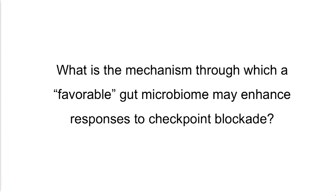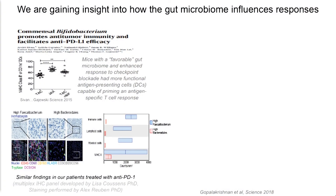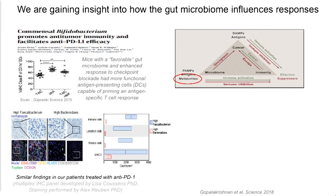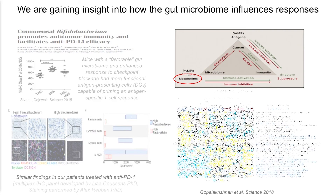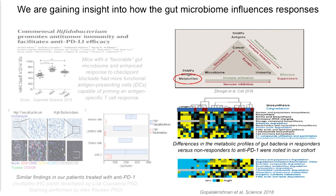A key question is what's the mechanism through which the gut microbiome can actually enhance responses to checkpoint blockade. We know that patients — or mice — with a good gut microbiome had more antigen-presenting cells within the tumor, and we found the same thing in our patients. We also know that metabolites are critically important, and we did metabolomic profiling — inferred metabolomics based on whole-genome shotgun sequencing — and found differential metabolomic signatures.